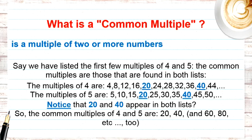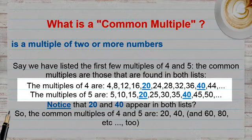Now we know the meaning of a multiple. What is a common multiple? It's a multiple shared between two numbers, or a multiple of two or more numbers. The common multiples are those found in both lists. Multiples of 4 are: 4, 8, 12, 16, 20, 24, 28, 32, 36, 40, 44. Multiples of 5 are: 5, 10, 15, 20, 25, 30, 35, 40.